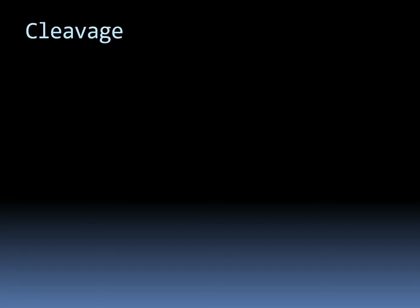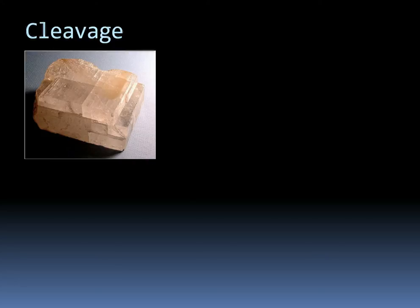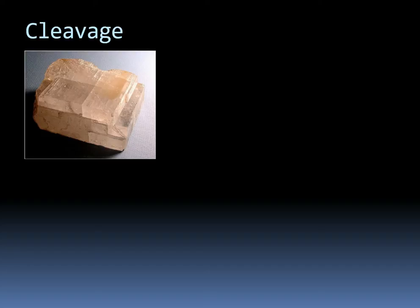The first property we're going to look at is cleavage. This is actually one of the most distinguishing characteristics for some minerals. Cleavage is when a mineral breaks along a distinct planar surface. For instance, here is a picture of the mineral calcite.